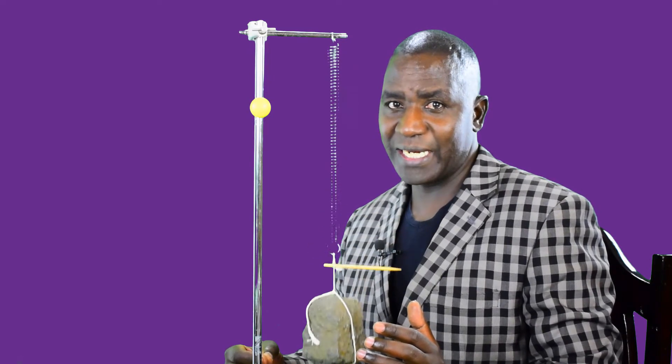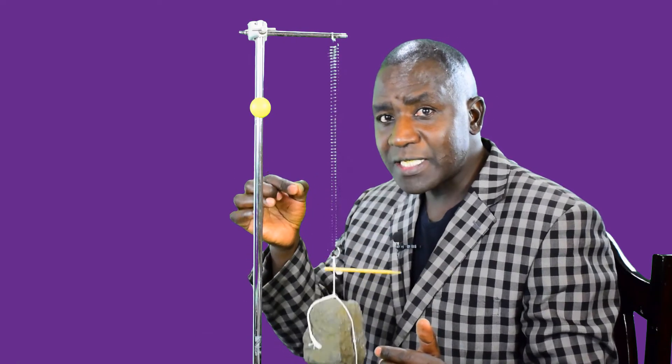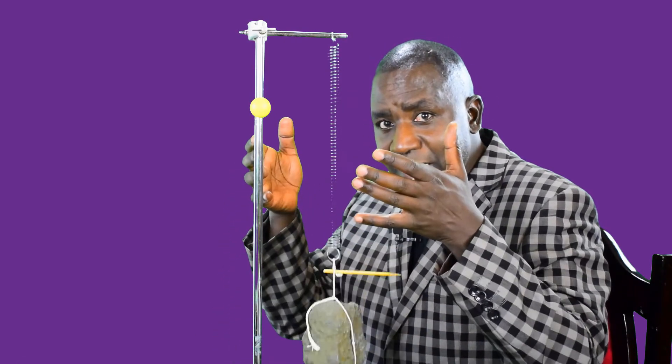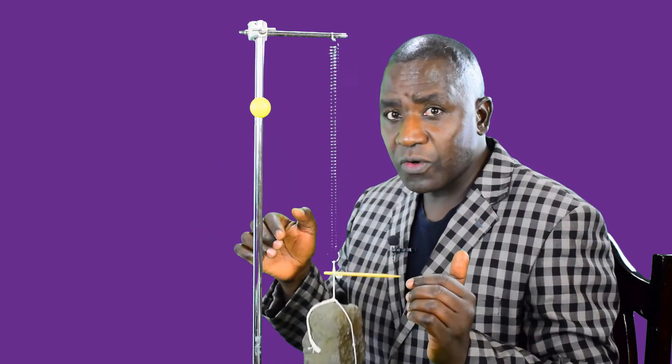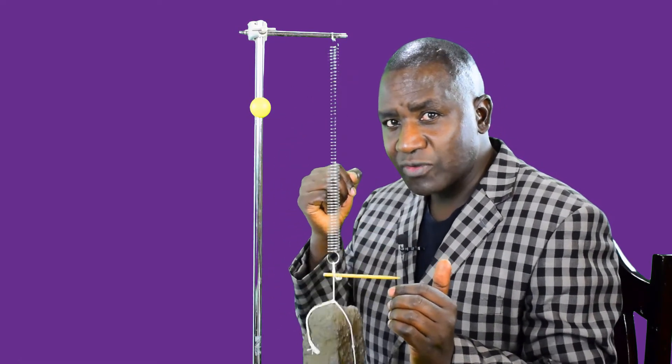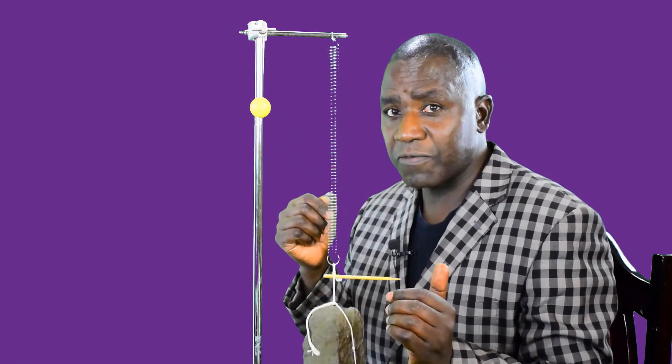Many times we pull the spring downwards, but when we release, it starts wobbling. Reason being, we've not displaced it in the correct direction. But when we raise it and release, it can't make a mistake. It will always oscillate in that very straight line, so it will never run out of alignment.